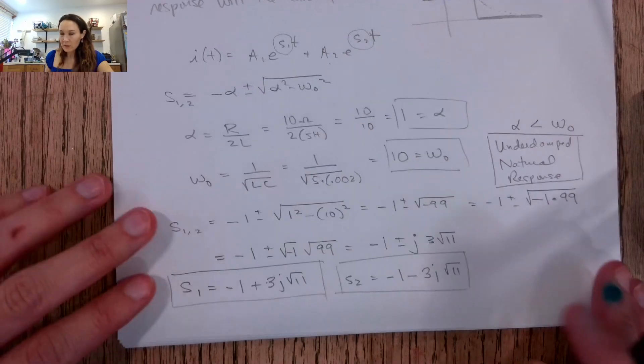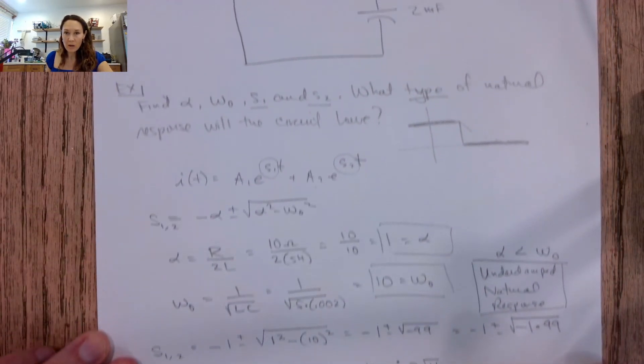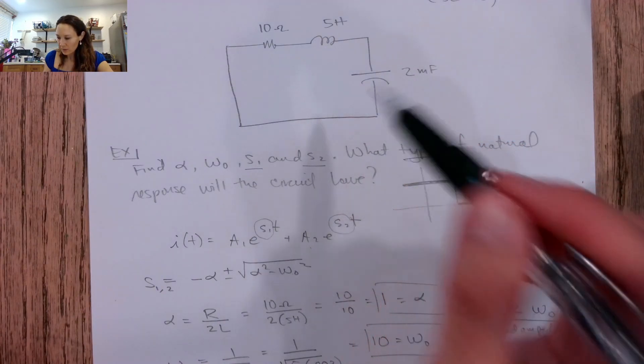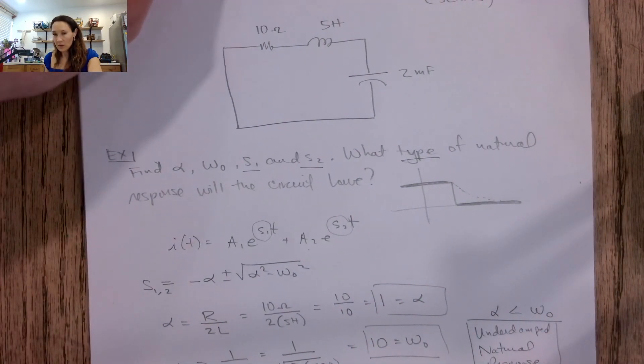Okay, so let me know if you have any questions about how to handle a problem like that, given some values for a simple series RLC circuit with no source.